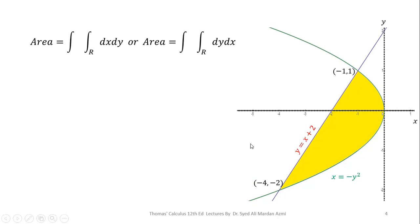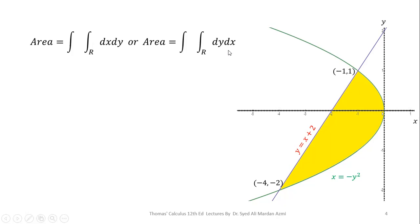In the next step we apply the area formula using the double integral. The formula is: Area = ∬_R dA = ∫∫ dx dy or dy dx. This means we have two cases: either we take x as the inner variable and y as the outer variable, or we take y as the inner variable and x as the outer variable.